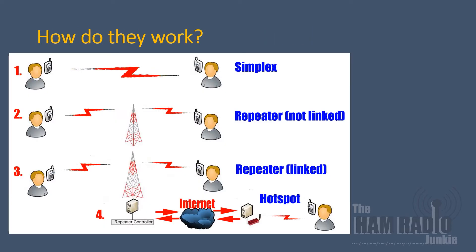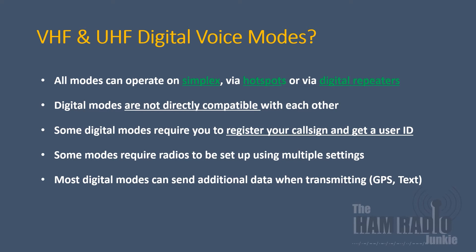Radio hams who own digital voice radios have a number of ways of communicating with fellow hams. The first two are very similar, if not identical, to how you would operate on analogue. The first one being simplex or point-to-point and the second one being through a repeater that's not linked to the internet. Where repeaters are linked to the internet, radio hams can contact fellow radio hams either through the repeater connected to other internet repeaters, or operators using hotspots.